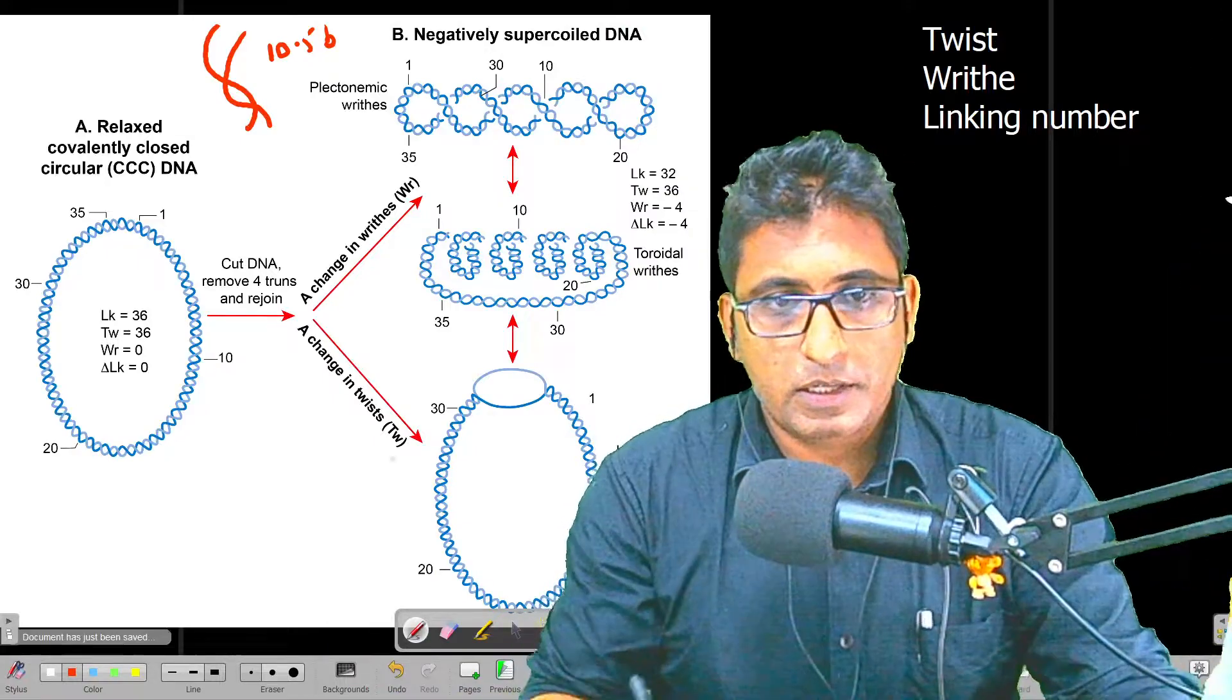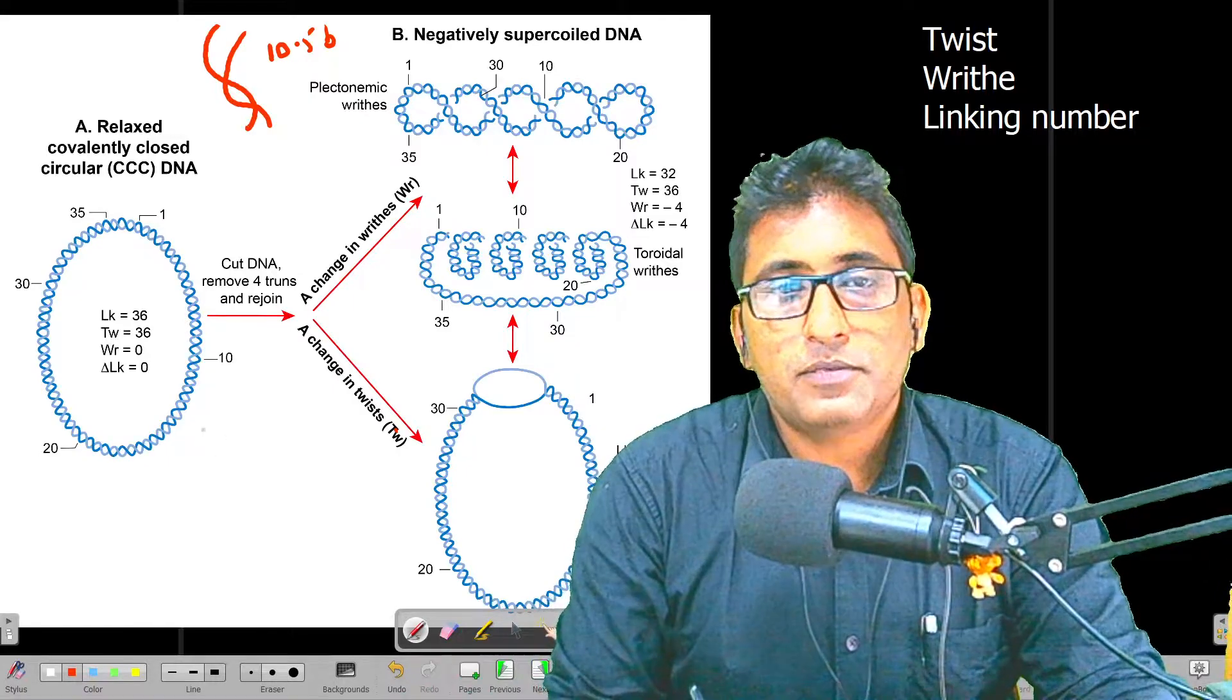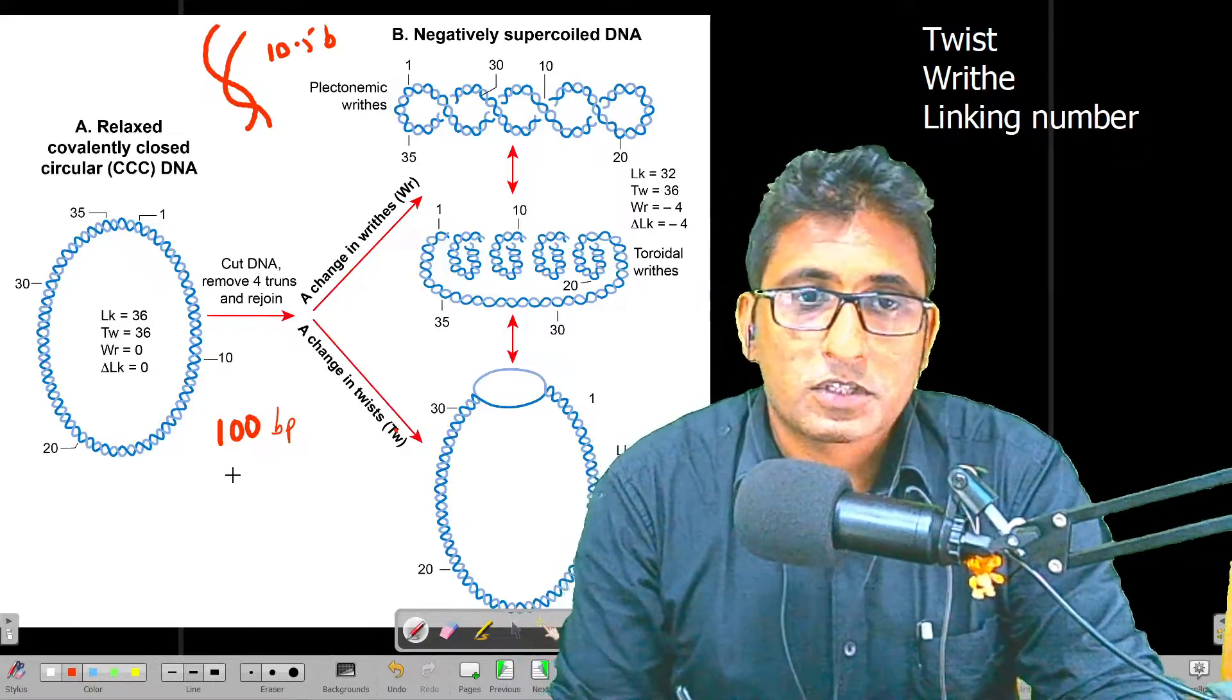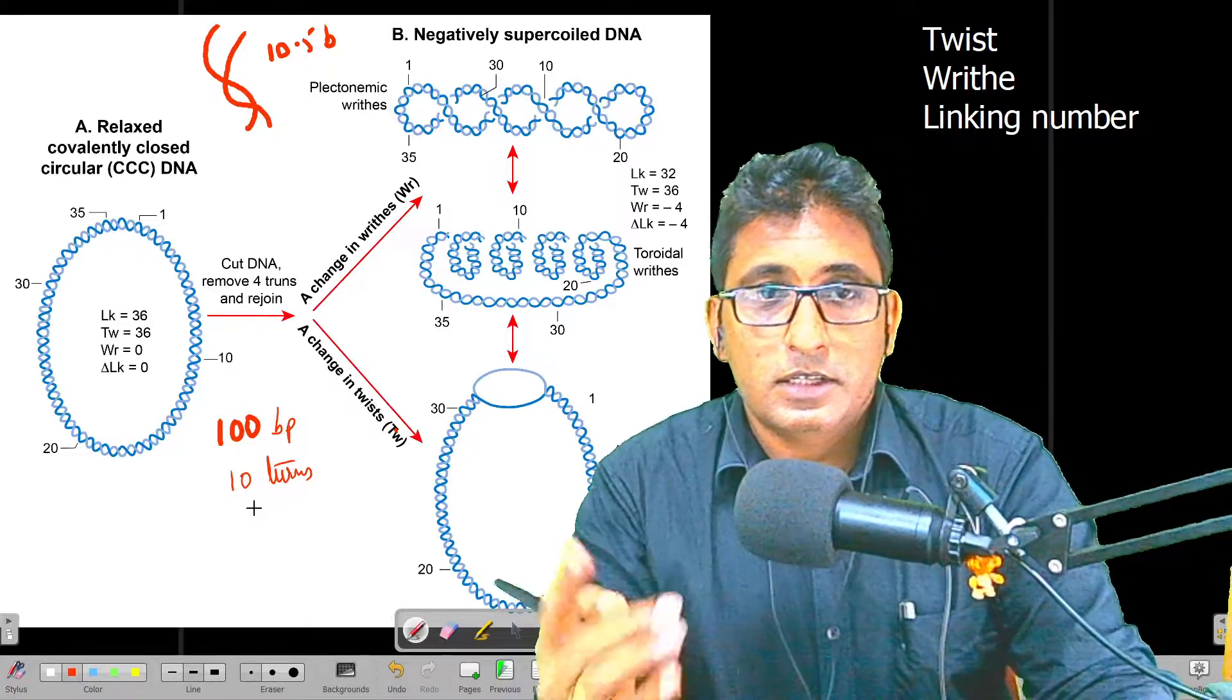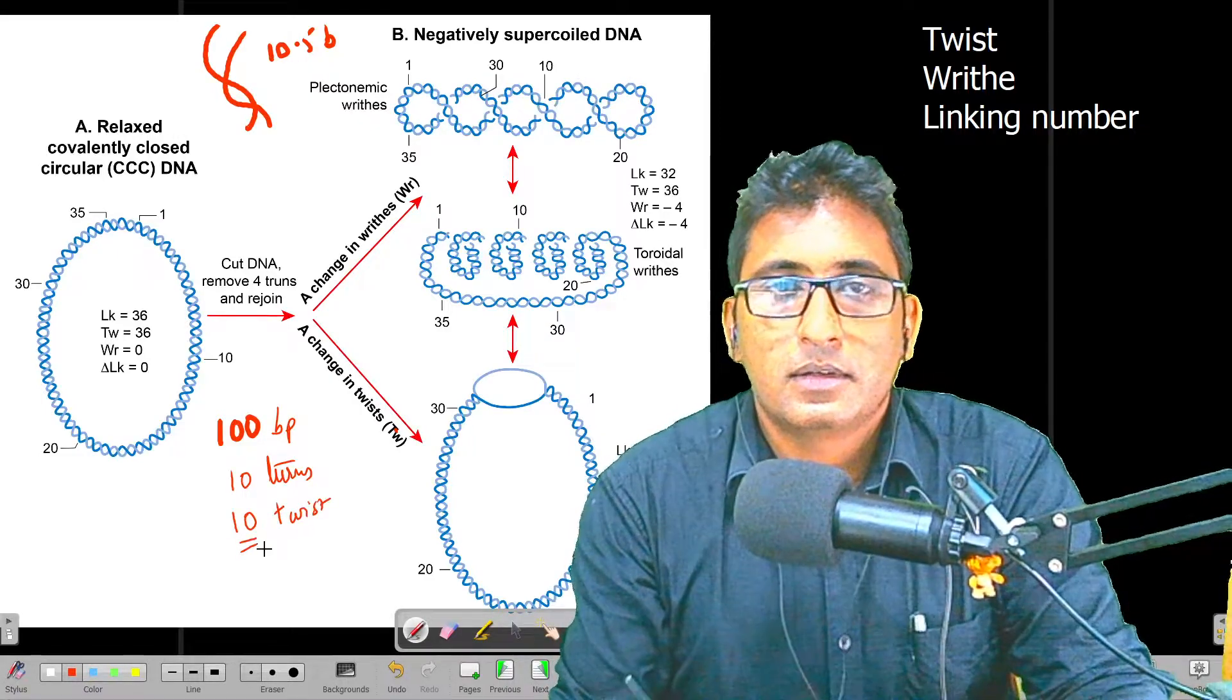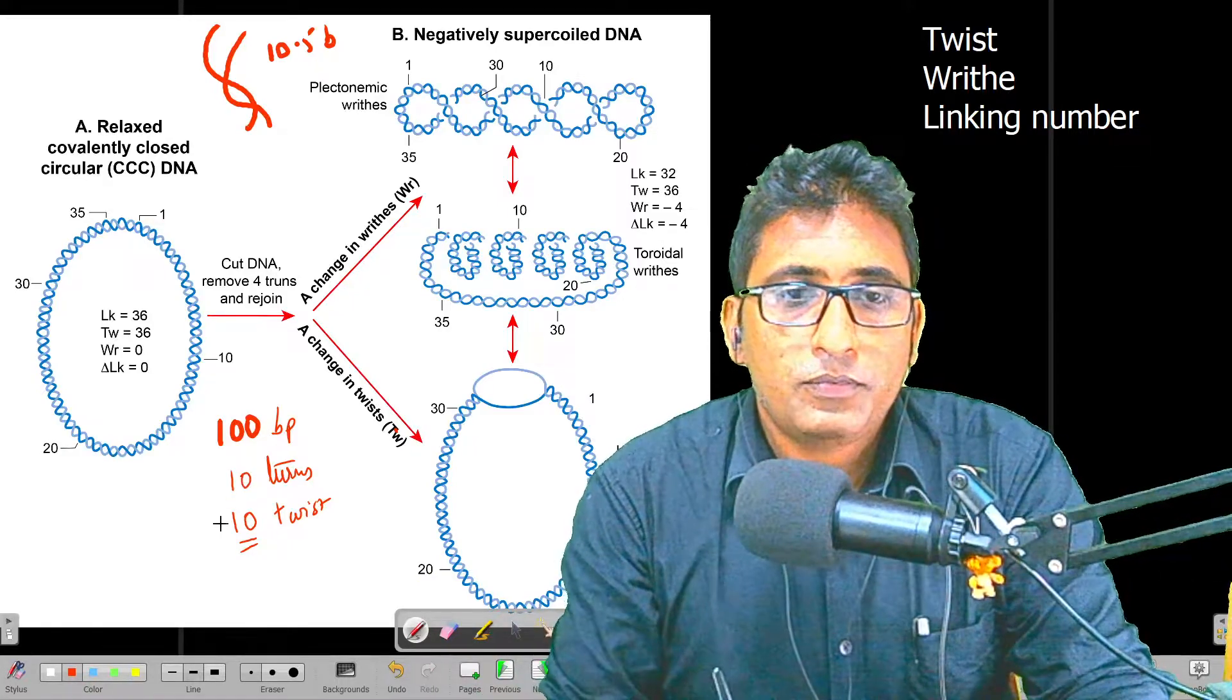If we recollect the number of how many twists would have normally occurred in general, then it would be very easy to answer. For example, if I had a hundred base pair DNA, then we could expect approximately 10 turns, and in these 10 turns, in each turn we have one twist, so we could expect twist is equal to 10.